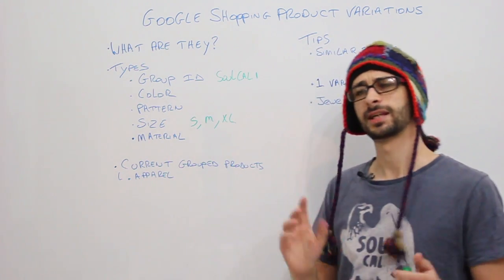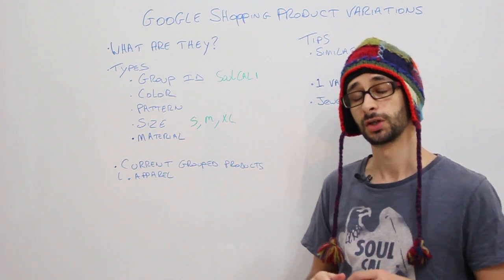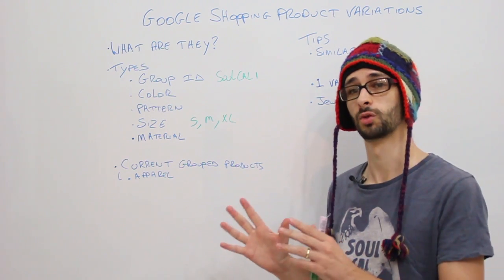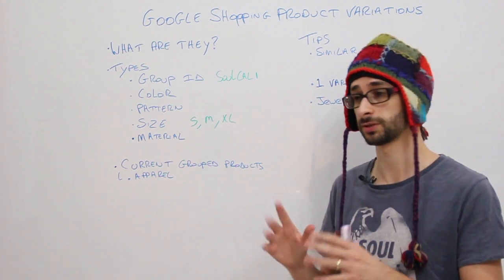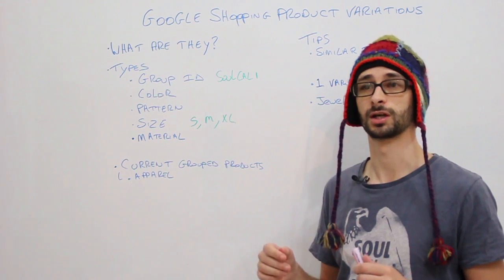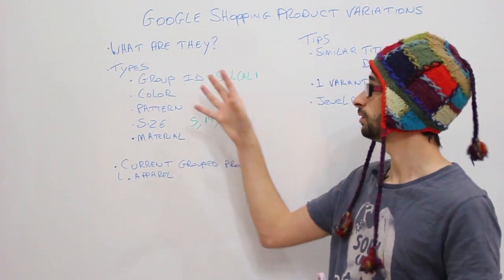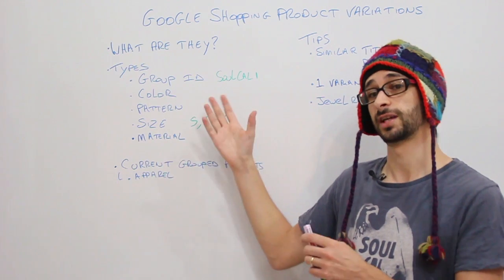Now let's say we don't have an apparel product. Currently Google only groups products within the group of apparel products, but you can do this for example if you have a pot of paint with different types of colors. It's the same problem essentially.